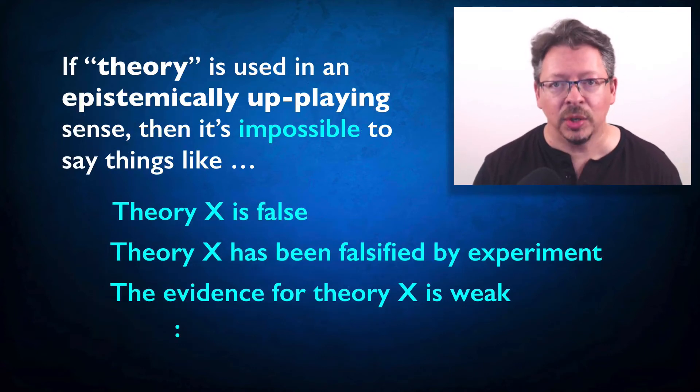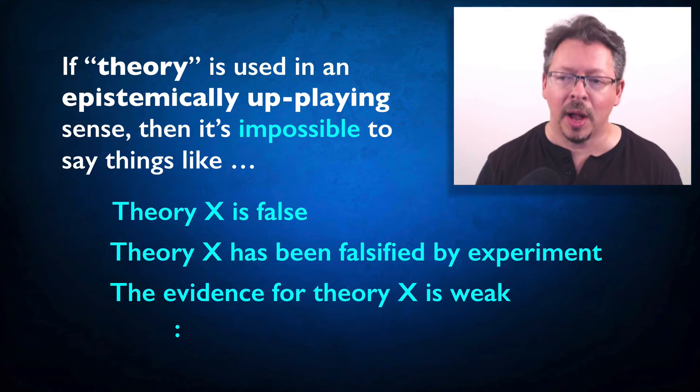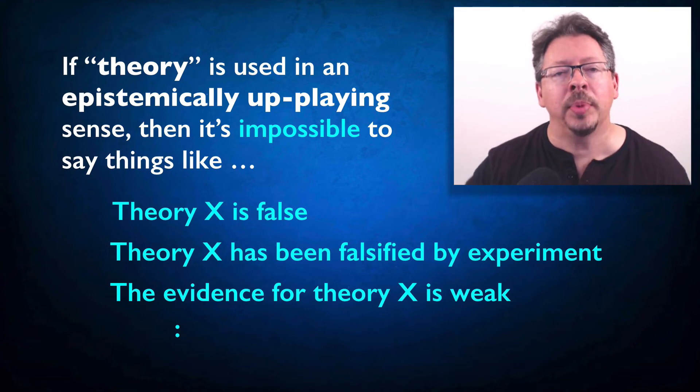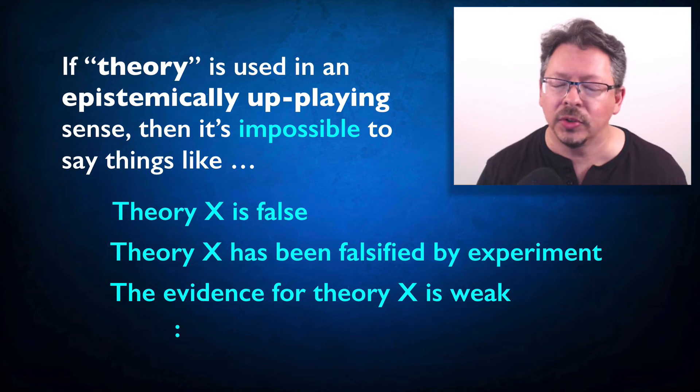If we're stuck having to use theory in this epistemically up-playing sense, then it's literally impossible to say some very natural things like that a theory is false, or that a theory has been falsified, or that the evidence for a theory is weak. All of these contradict the up-playing definition of a theory. But of course we can talk about false theories and falsified theories and weakly supported theories.